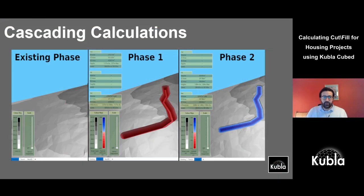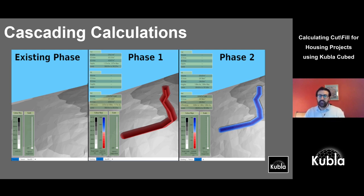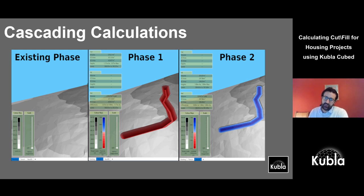I'll briefly cover how Kubla Cubed works with its phases. The key technology lets you do calculations between two surfaces in a cascade. You start with existing as a single surface, then the second phase is your proposed ground surface, and in the next phase you compare again — the proposed of one phase becomes the ground of the next. This can be used to do backfill: phase one is excavation, phase two is backfill, and a third phase would excavate from that backfilled level, not from the existing or phase one.